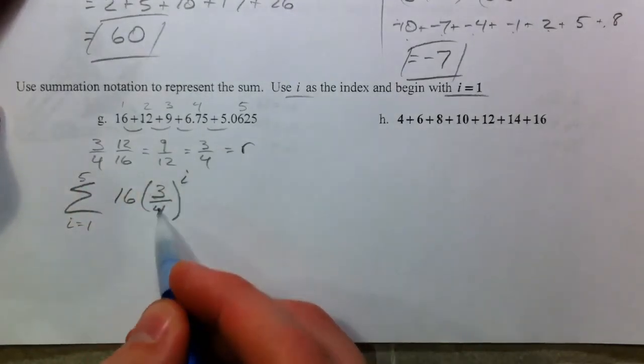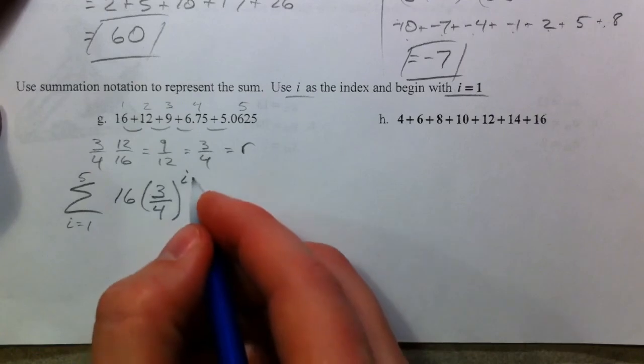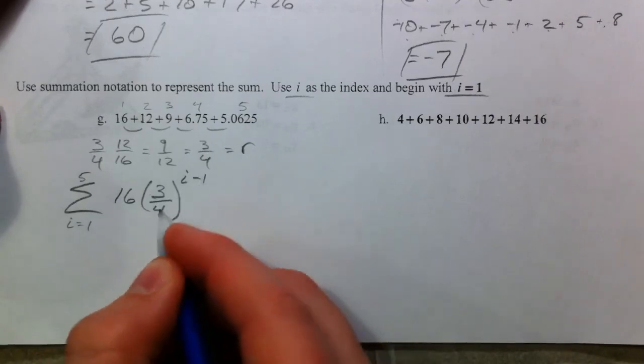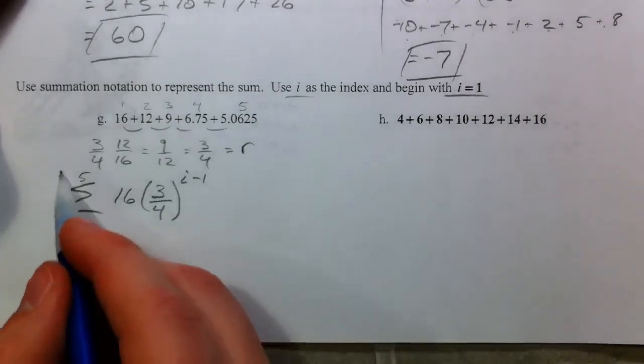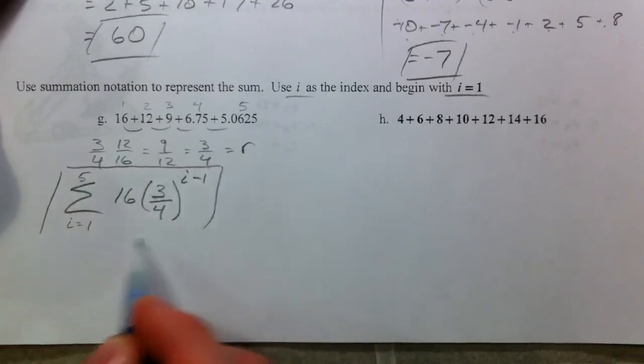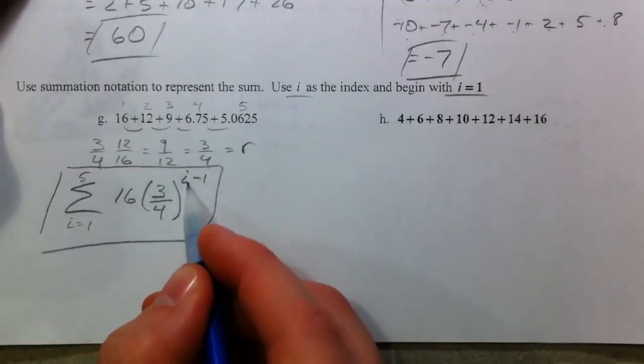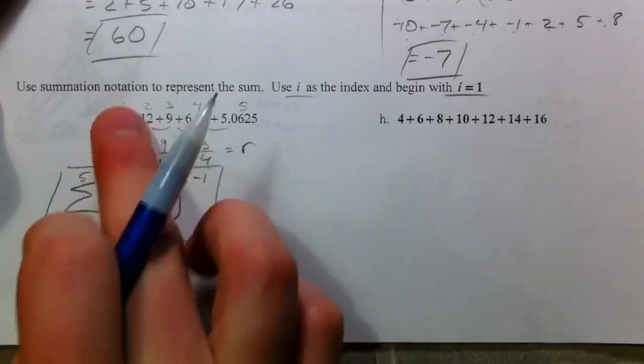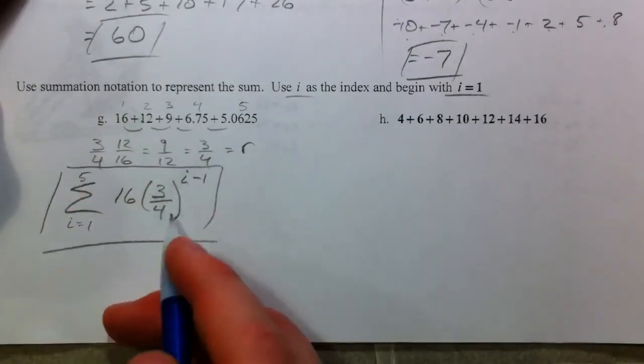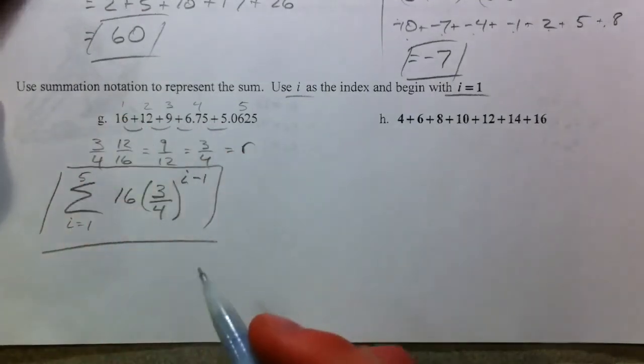And if I plug in 1 here, I'm going to multiply by 3 fourths already. So, I want to subtract 1 so I don't actually raise 3 fourths to the first power. And that way, 3 fourths is raised to the zero power the first time. So, you end up with 16 when you plug in 1. End up with 12 when you plug in 2. And you can try that out.